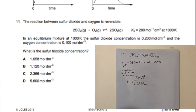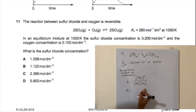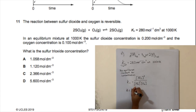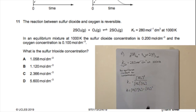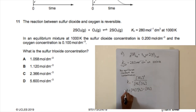We rearrange this to make sulfur trioxide the subject of the formula. Move the denominator to the other side by multiplying, then to get rid of the squared on SO₃, we take the square root of both sides.